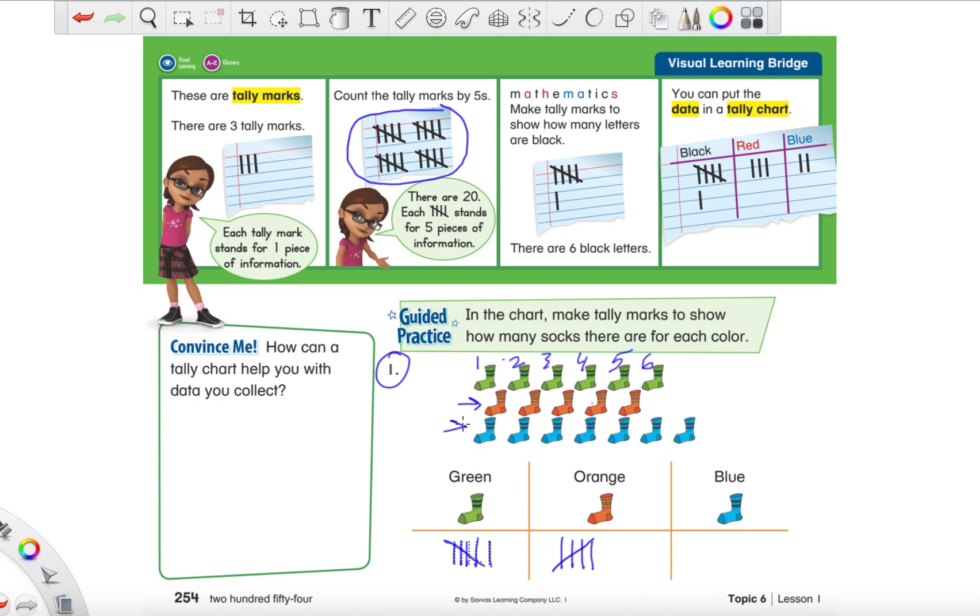All right. If you still need more time, pause the video. If you don't need more time, then keep it rolling and let's go over together. Let's make sure you did it correctly. So for orange, you're just going to count the orange ones. One, two, three, four, five. So we should have five tally marks and they should look like this. One, two, three, four, and five. Now again, whichever corner you start from doesn't matter to me as long as that fifth tally mark goes across and makes a little bundle. All right. Now go ahead and try the blue socks for our blue part of the chart.